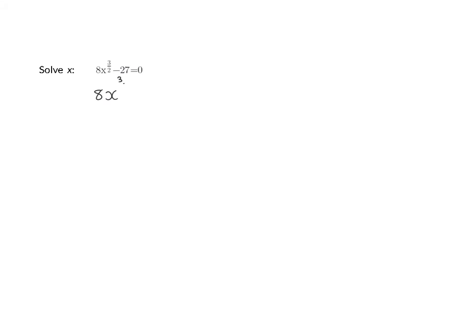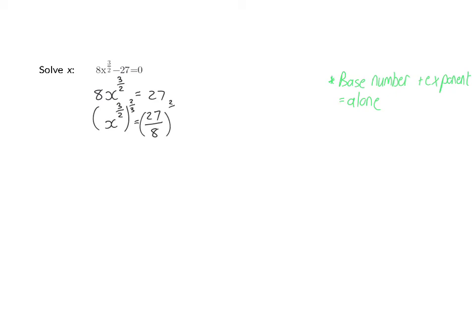Let's have a look at another example. We'll start off moving the 27 to the right, and now you need to realize that you first have to divide by 8 before you raise to the reciprocal. You can only raise to the reciprocal once the base and exponent is alone on one side of the equation. So now that I've divided by the 8, I can raise to the reciprocal which is 2 over 3 on both sides.